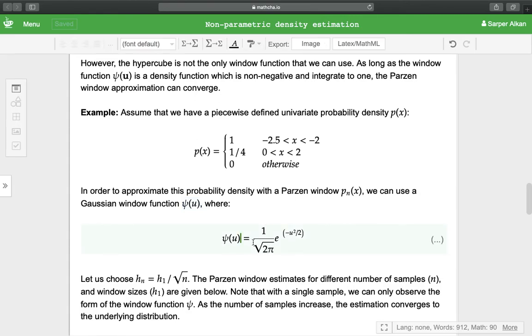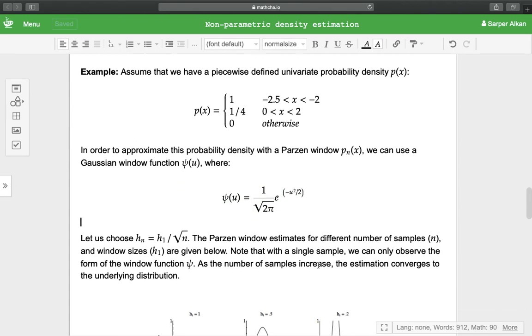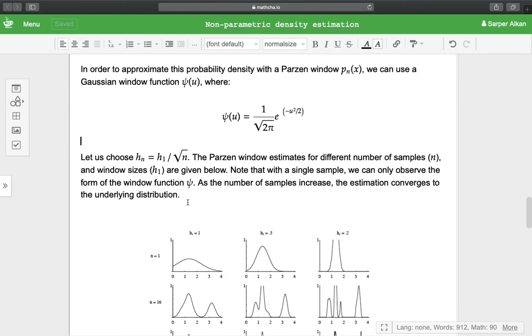We can do that with a Parzen window with a Gaussian window function φ(u), where φ(u) is defined as 1 over square root of 2π times e to the minus u squared over 2.